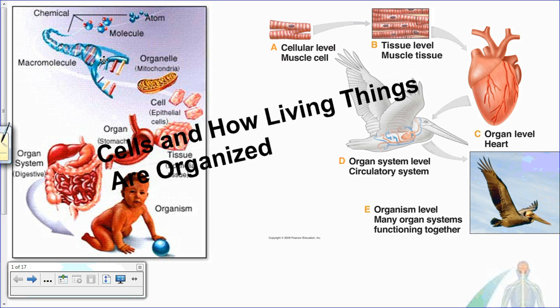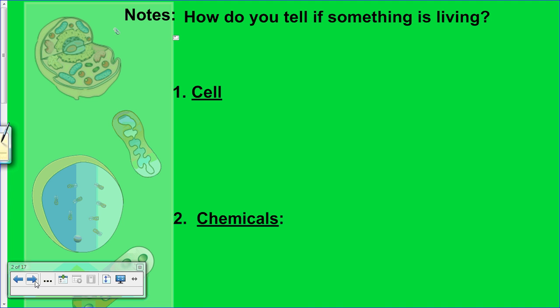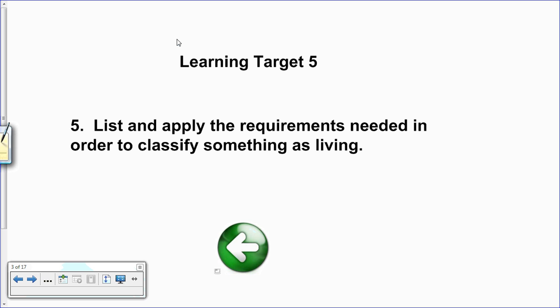We are starting our unit on cells and how living things are organized. Today's essential question is: how do you tell if something is living? We're going to be looking at living things, how we classify them, and how we know that they are living. Our learning target for today is learning target five — we need to be able to list and apply the requirements needed in order to classify something as living.